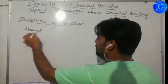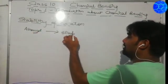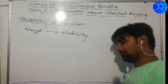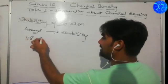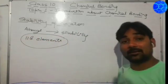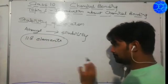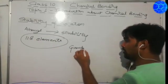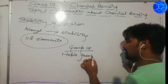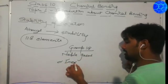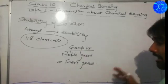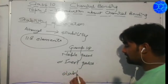In the same way, atoms also require stability. We have 118 elements in the modern periodic table. Out of those, only group 18 elements — referred to as noble gases or inert gases — are considered to be stable.